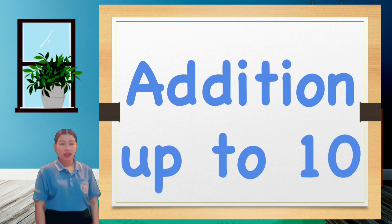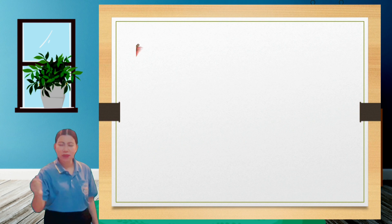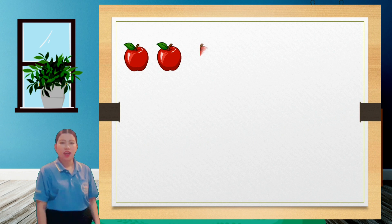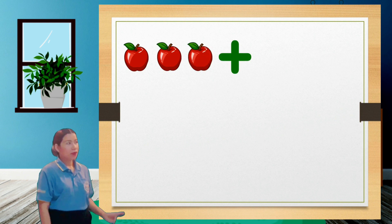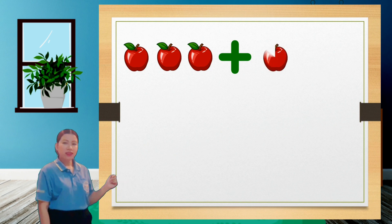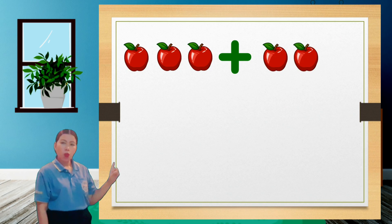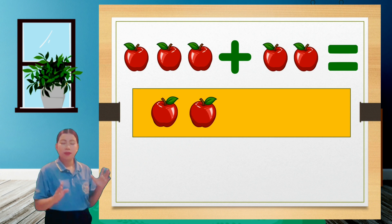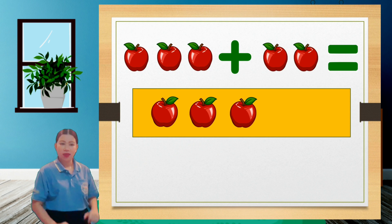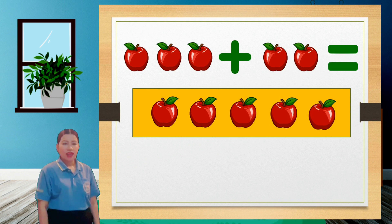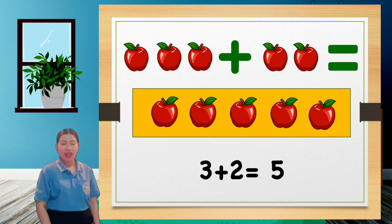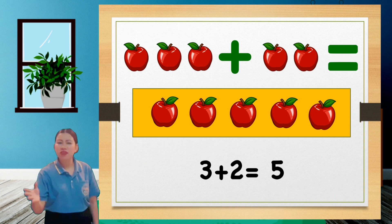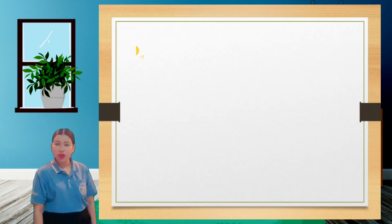We have addition up to 10. Please repeat after me: addition up to 10. We have here three apples plus two apples equals — let's put all the apples together. There are five apples. Three plus two equals five. Please repeat after me: three plus two equals five.